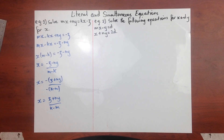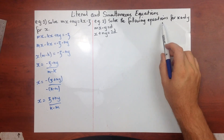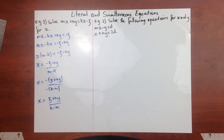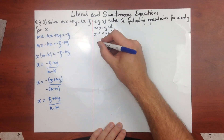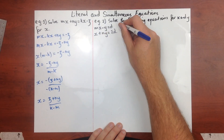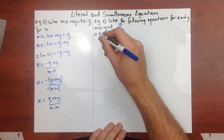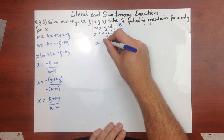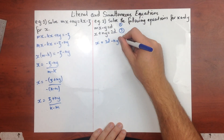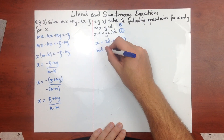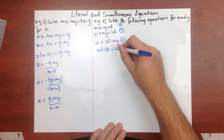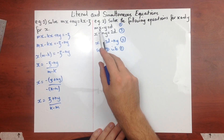Our second worked example is: solve the following equations for x and y. This is a simultaneous literal equation — no numbers, just variables. This first equation looks nice to rearrange for x and substitute back in. I'll call them equation one and equation two, and substitute equation two into equation one.